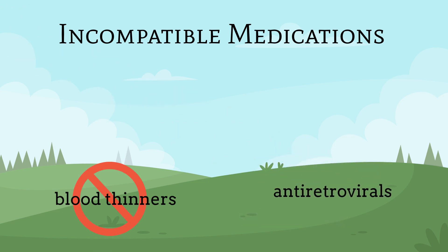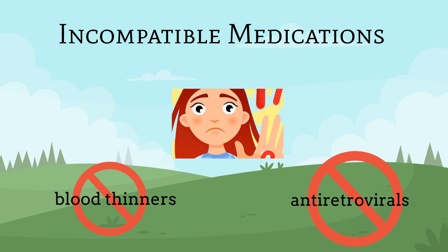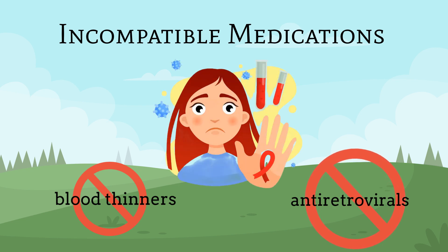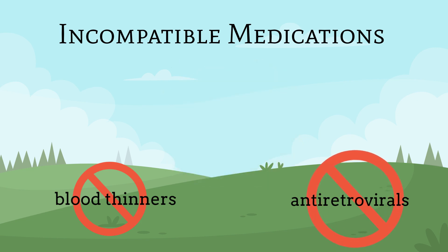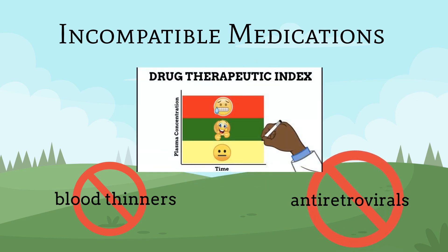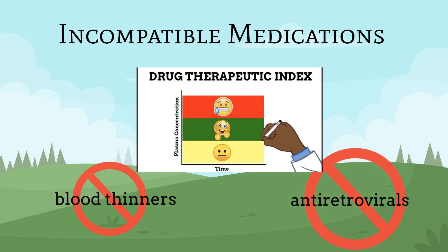Garlic can also interact with antiretrovirals, such as those used to treat HIV and AIDS. This is because garlic increases liver enzymes and can therefore decrease the concentration of antiretrovirals in the system, which can cause them to become sub-therapeutic or ineffective.